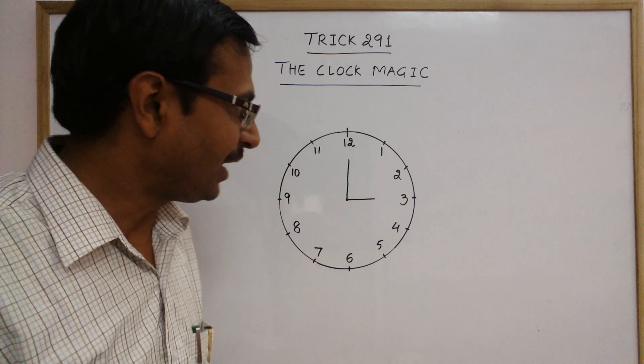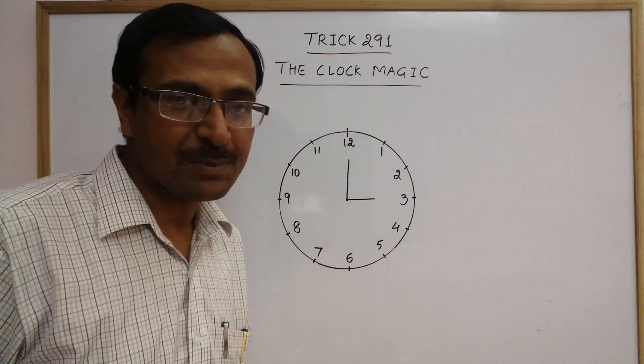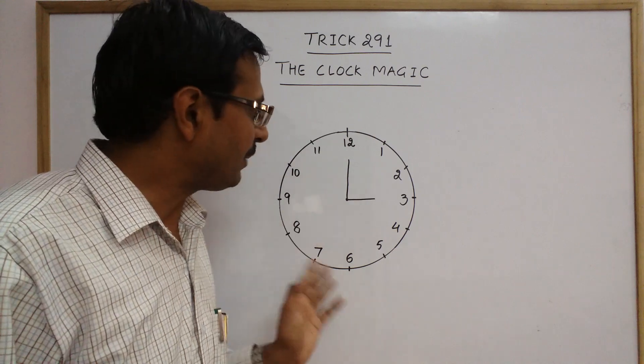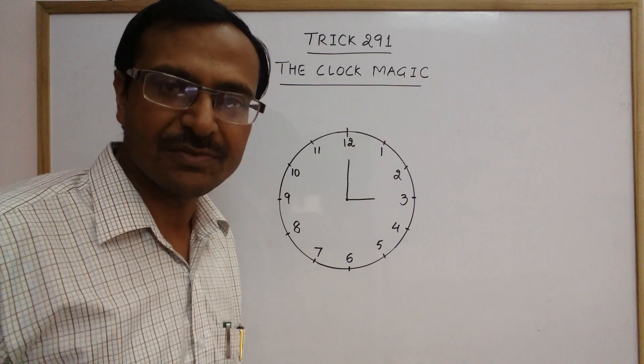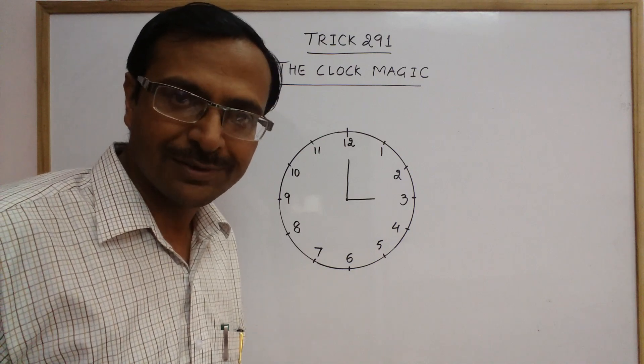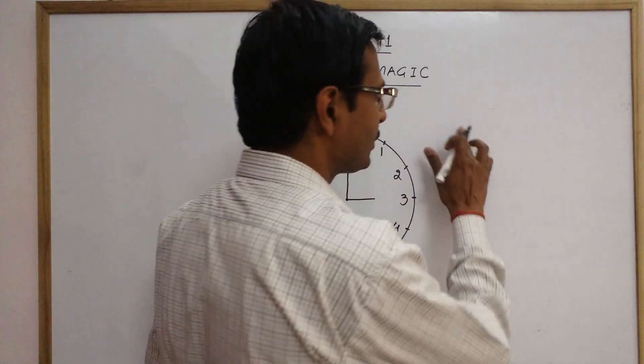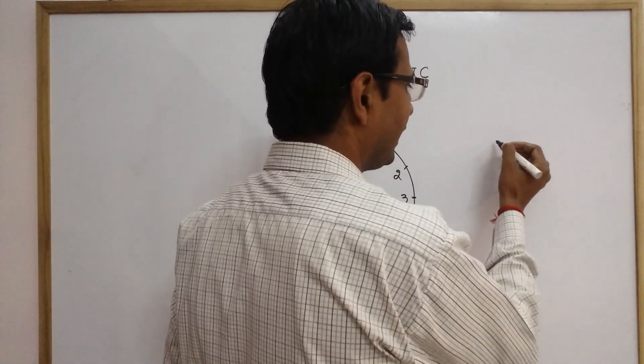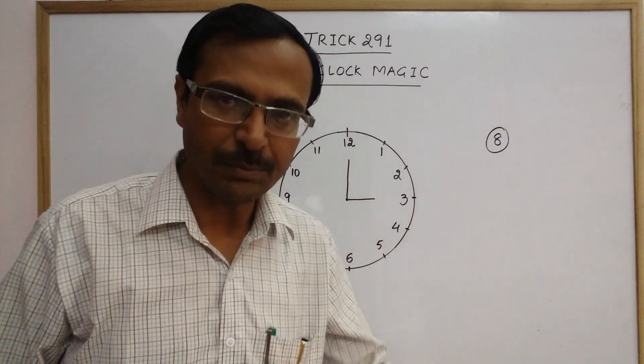So you must be thinking, how is it possible? But yes, mathematics can make it possible. It is a simple concept of time and the numbers, simple concept of these numbers which are on the face of a clock. Now I will just demonstrate this. Suppose the number he has thought is 8. I do not know what number he has thought, I am just taking an example.